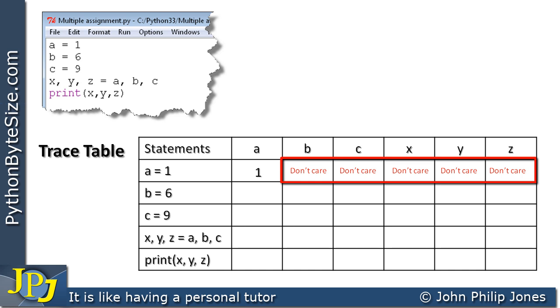B doesn't exist until the execution of the next program statement. We simply need to put something here. You don't have to put don't care if you want. You can put a dot. But put something there. It just shows that you've thought about what's going to happen to each of these variables after the first statement has executed.